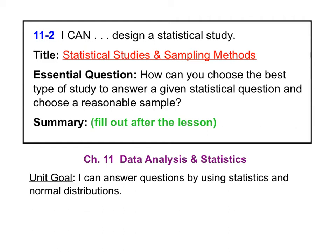Today we're starting a new unit. This unit is also Chapter 11 from the Algebra 2 textbook, Data Analysis and Statistics. The unit goal is: I can answer questions by using statistics and normal distributions. Today's lesson is Lesson 11-2 on statistical studies and sampling methods. The essential question is: how can you choose the best type of study to answer a given statistical question and choose a reasonable sample? We'll also focus on making sure your questions and studies do not create any bias.